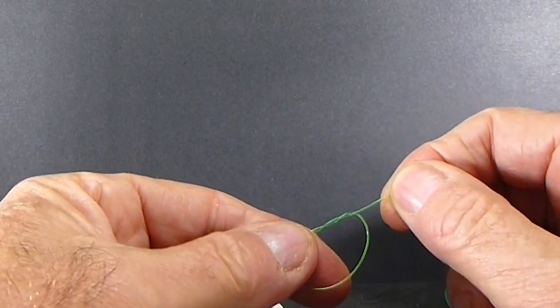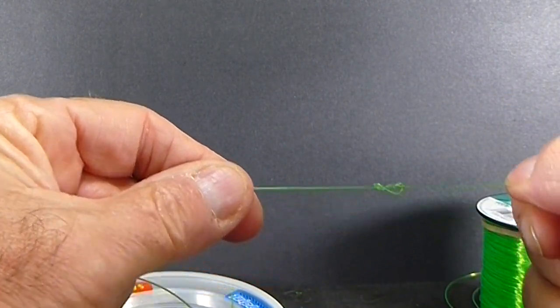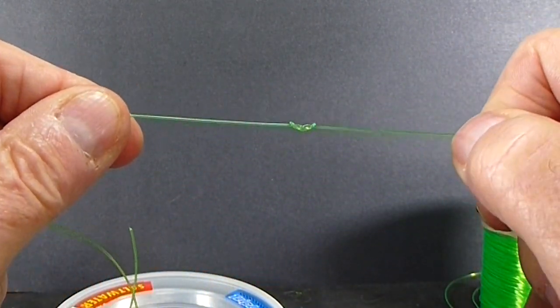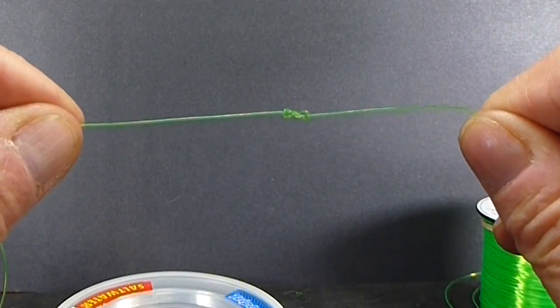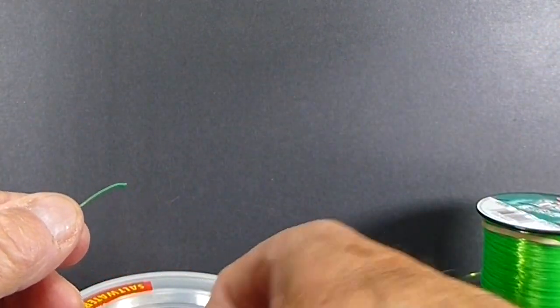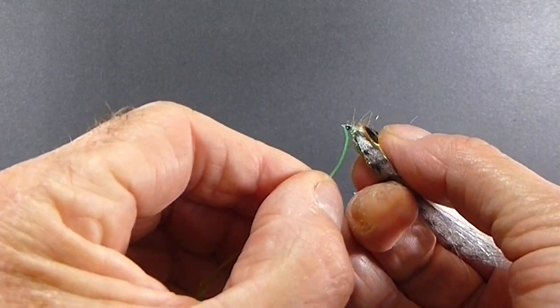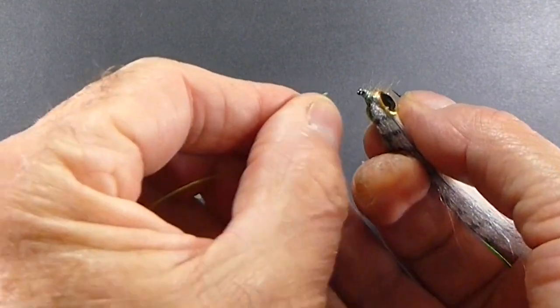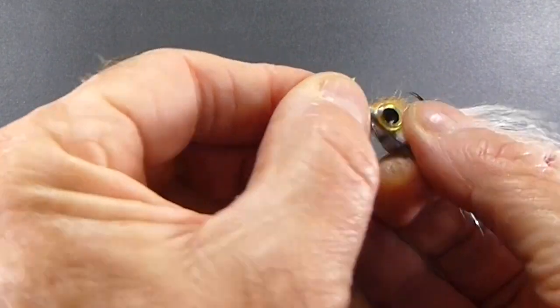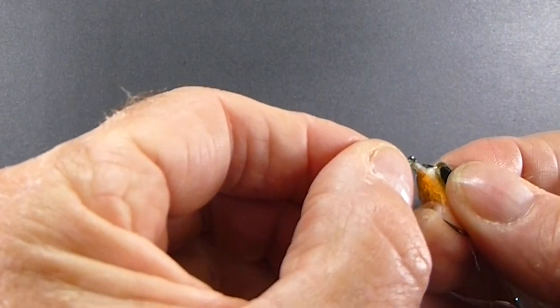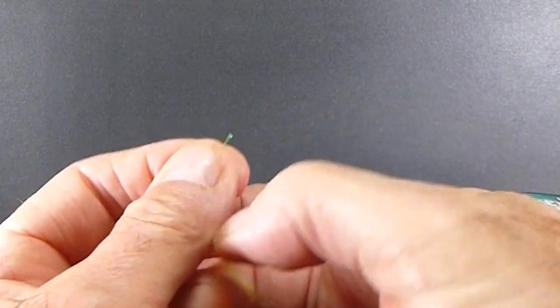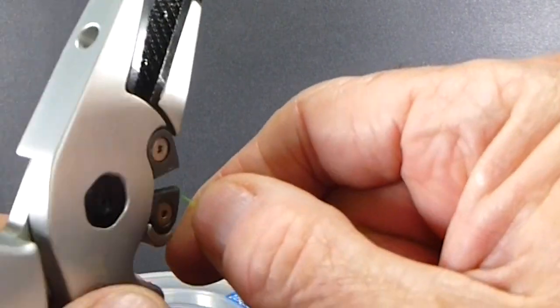And then I'll pull this down until you see figure 8 form, right there. Now we take it through the eye of the hook. See this 40, this is barely going to go through here, I think I didn't nip it off quite straight, maybe that was it.